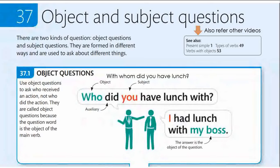Let us look at our first pointer: object questions. We use object questions to ask who received the action — that means who is the recipient of the action, not who did the action. They are called object questions because the question word is the object of the main verb.